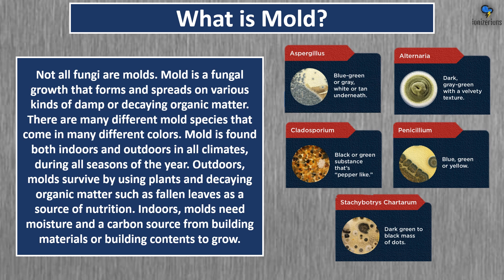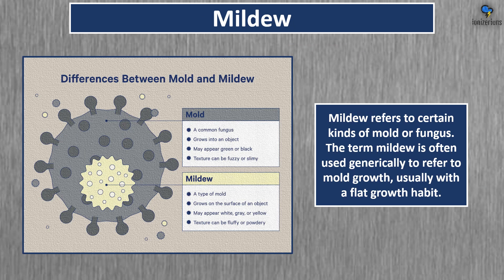Not all fungi are molds. Mold is a fungal growth that forms and spreads on various kinds of damp or decaying organic matter. There are many different mold species that come in many different colors, found both indoors and outdoors in all climates during all seasons. Mildew refers to certain kinds of mold or fungus — the term is often used generically to refer to mold growth with a flat growth habit, though sometimes people confuse the two.